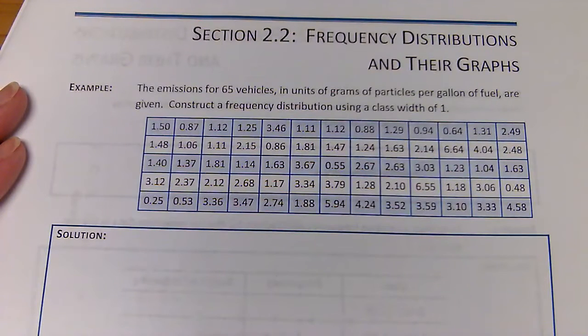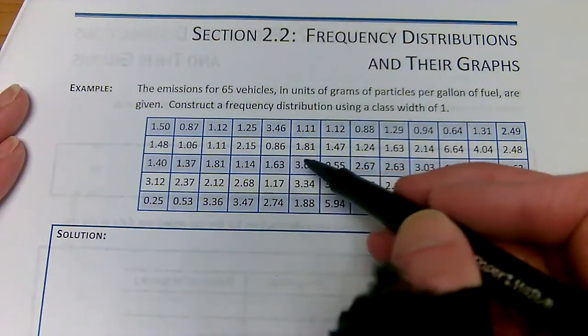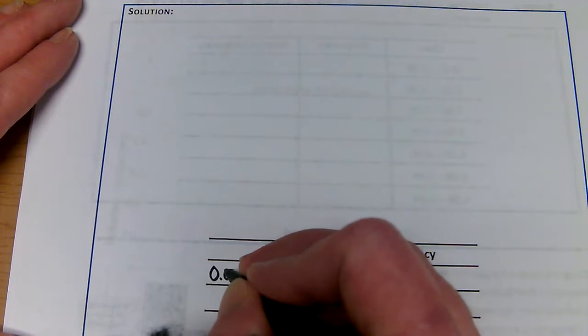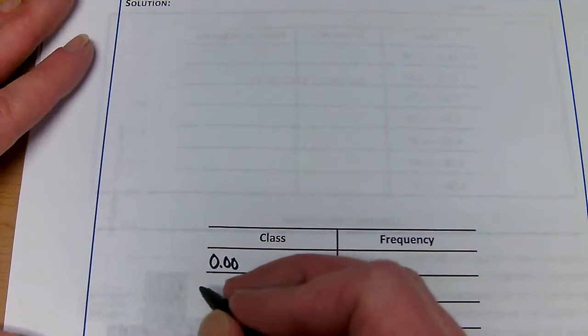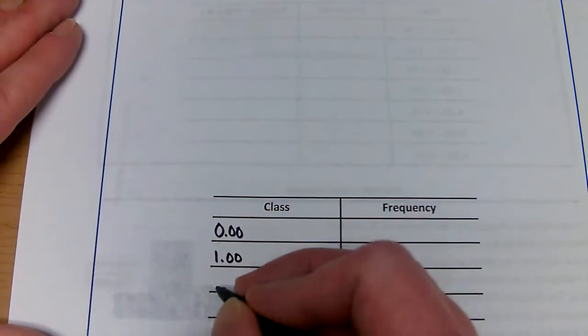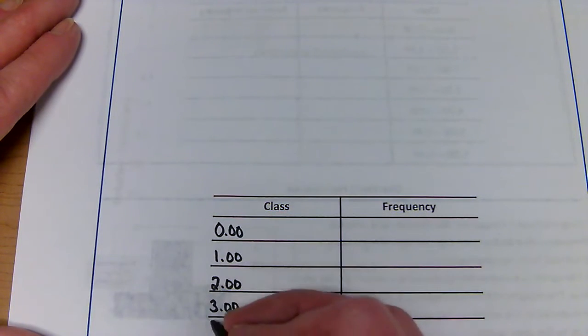We need to start it lower than what we have. If I look in the data I have some that are like 0.86, so maybe we start our class at 0.00. Then with class width of one, the next one would start at 1.00, then 2.00, 3.00, 4.00, and 5.00.